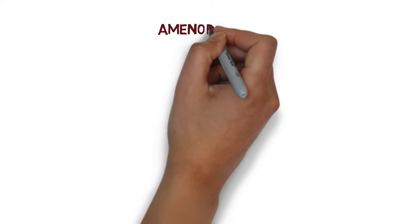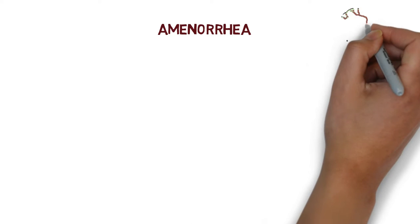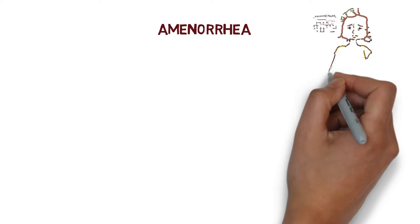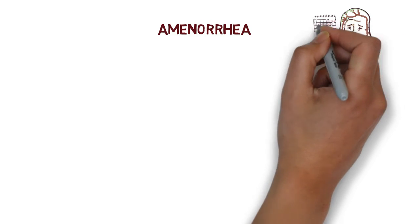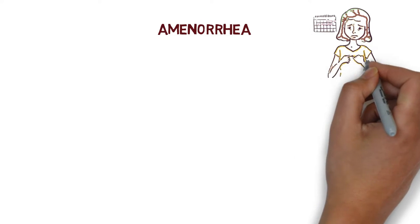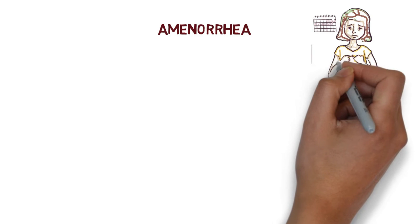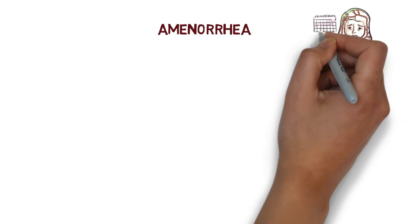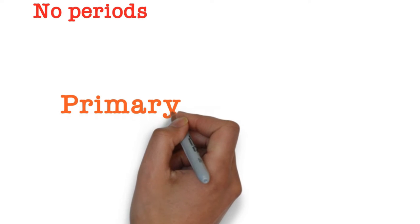Hey Medicos, welcome back. Today we are going to learn about Amenorrhea. Menstruation or periods is normal vaginal bleeding that occurs as a part of women's monthly cycle. But in Amenorrhea, there are no periods.